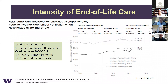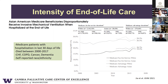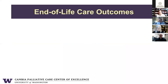As we look at intensity of end-of-life care, we see the same patterns as for other racial and ethnic minorities — Asian Americans being more likely to receive intensive care. This is looking at Medicare patients who had a hospitalization in the last 30 days of life, with data for decedents between 2000 and 2017. Looking at rates of invasive mechanical ventilation, both Medicare fee-for-service and Medicare Advantage Asian Americans have higher rates than whites.